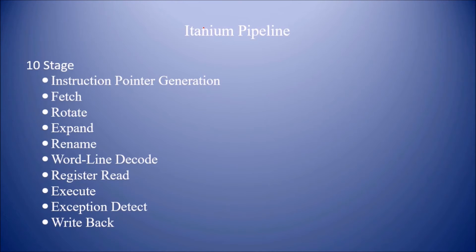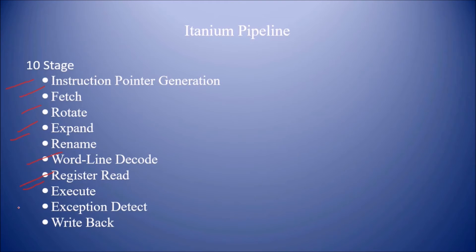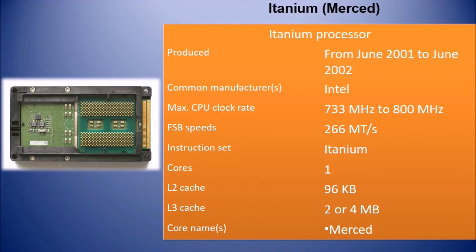The Itanium pipeline has the following stages: instruction pointer generation, fetching, rotating, expanding, renaming, wordline decode, register read, execute, exception detect, and write back. Itanium 2 reduced this to eight stages. Itanium, also popularly known as Merced, was produced from 2001 to 2002.